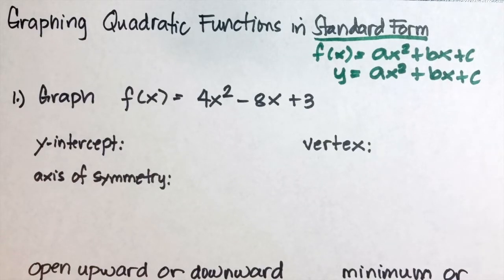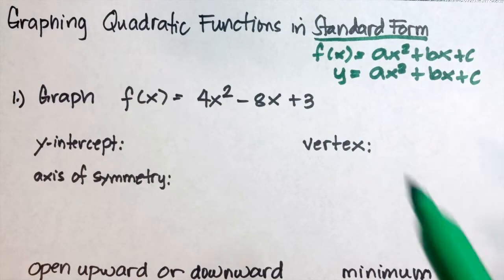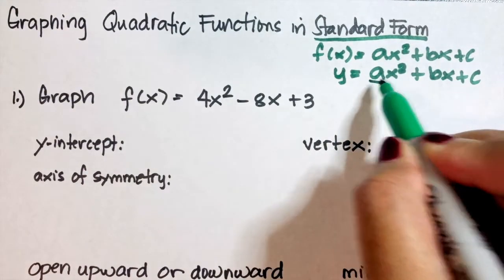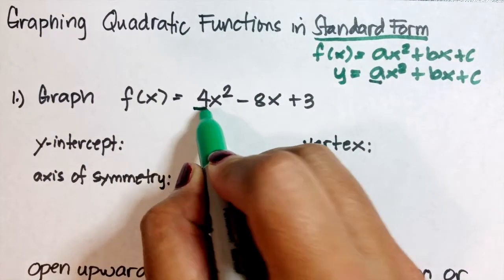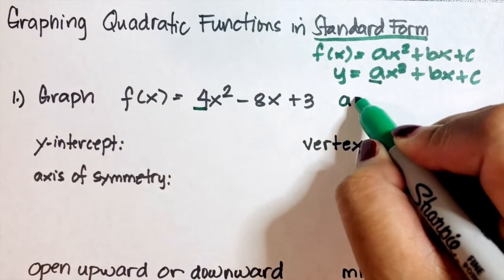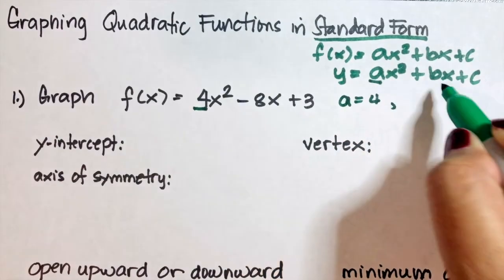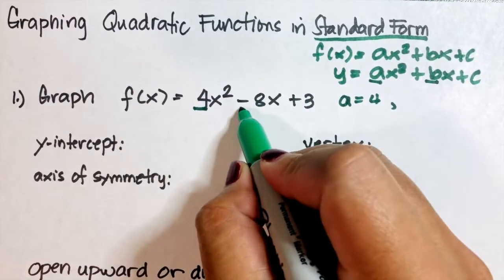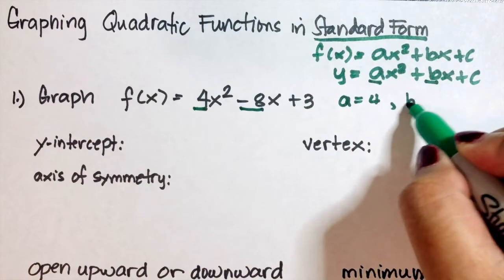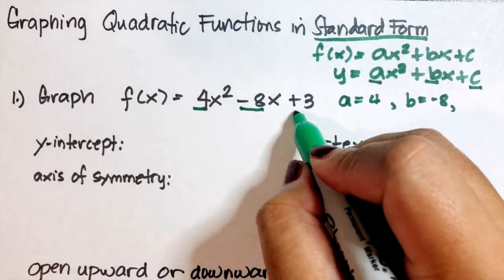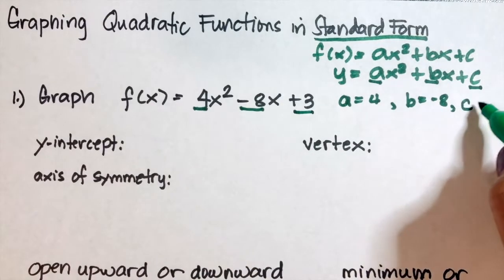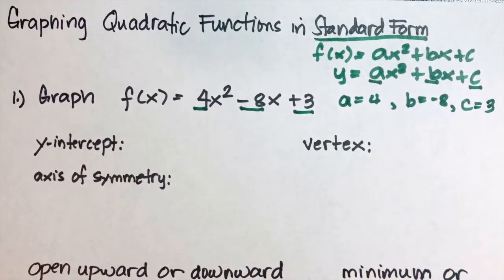First, let us identify the values of a, b, and c in the given function. Our a is the coefficient of x², therefore it is positive 4. b is the coefficient of x, so it's negative 8, and c, our constant term, is positive 3.